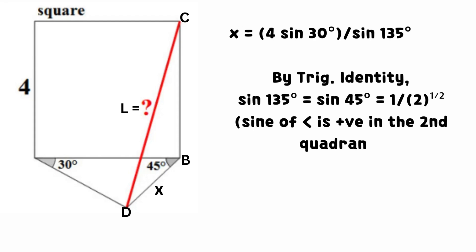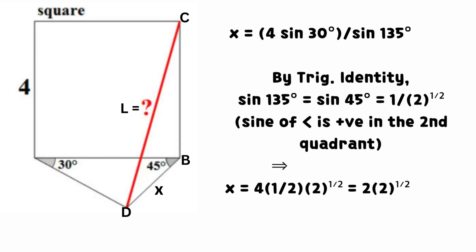X equals 4 multiplied by sine 30 degrees, all divided by sine 135 degrees. By trigonometric identity, sine 135 degrees equals sine 45 degrees, which equals 1 divided by the square root of 2. This is because the sine of an angle is positive in the second quadrant.